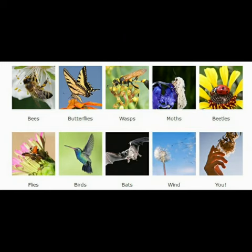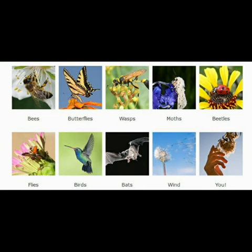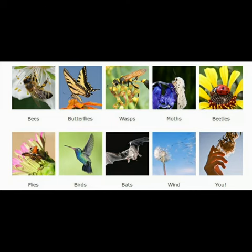In pollination, many agents such as bugs, honey bees, butterflies, bats, beetles, wind, and water help transfer the pollen grains from one flower to another flower. Those agents that help in pollination are called pollinators.